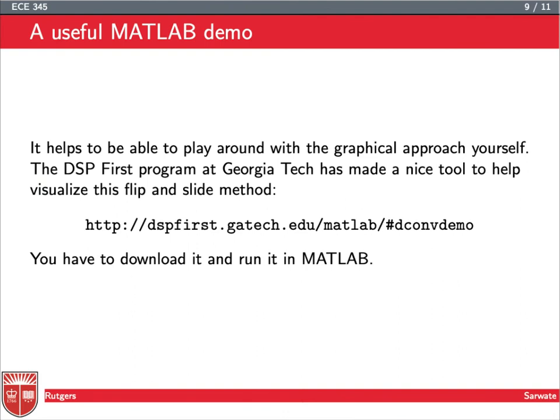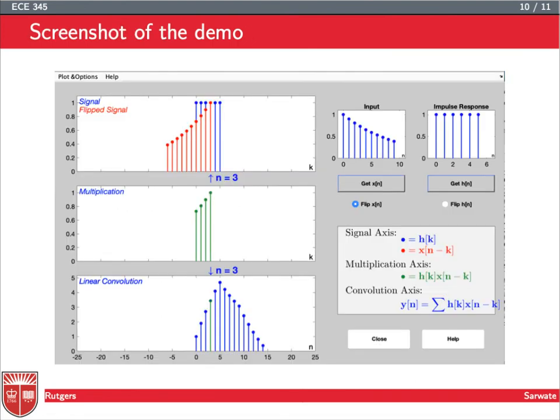A very useful MATLAB demo that can help you build intuition about this graphical flip and slide approach is available at the DSP First website at Georgia Tech. You go to this URL, download a zip file which has this convolution demo, and run dconvdemo.m. You'll pop up a nice graphical display. You can see it's a GUI, and you can change your x[n], you can change your h[n], you can think about x[n] being flipped and slid across h[n], or you can flip h[n] and slide it across x[n], because of the commutativity of the convolution. It tells you what time of the output you're looking at, and draws the partial overlap between the two signals, shows you what the multiplication looks like. This is the part you're going to sum up to get the output.